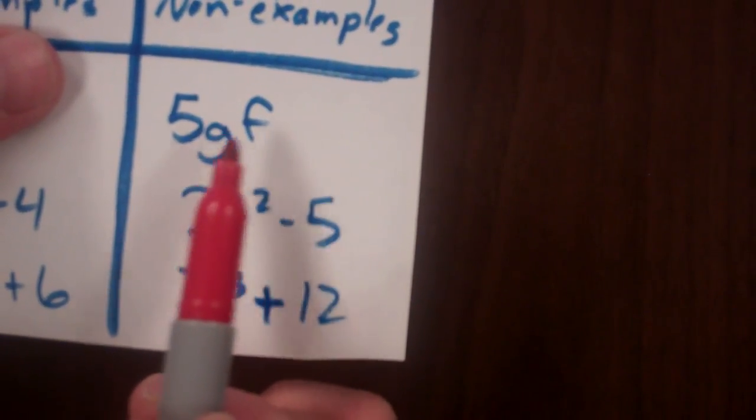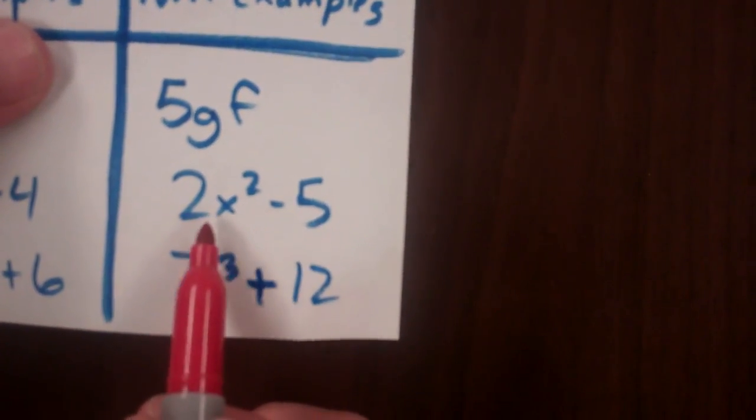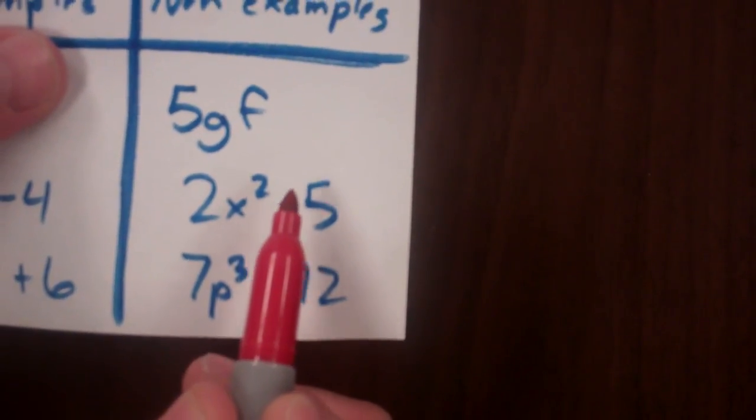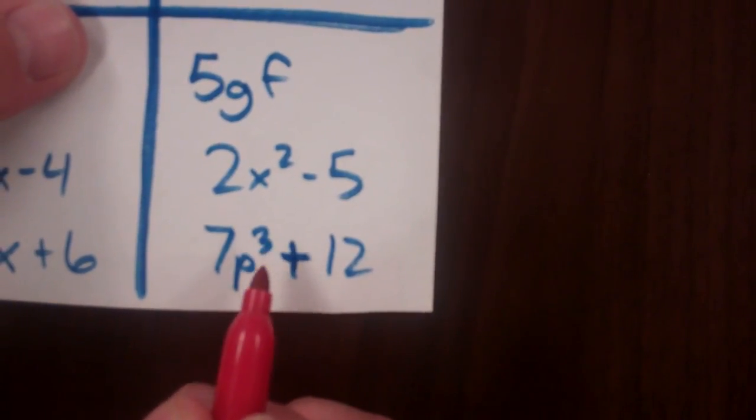Here I have multiplied variables, which means it's no longer a linear expression. Here I have an x raised to a second power, something other than the first power, so not a linear expression. And once again, p to the third power, no longer a linear expression.